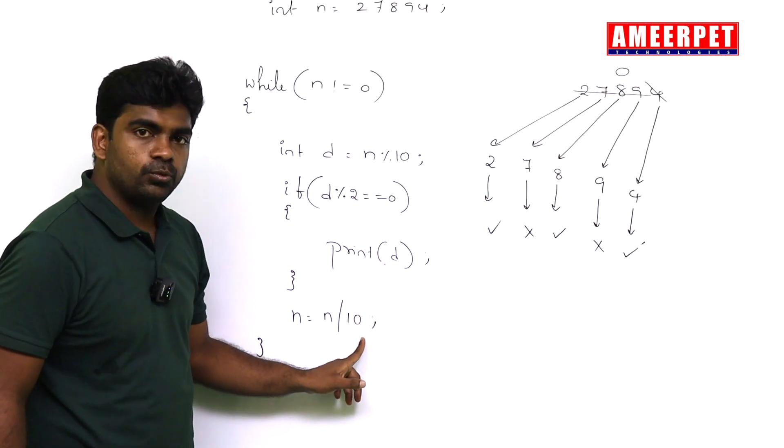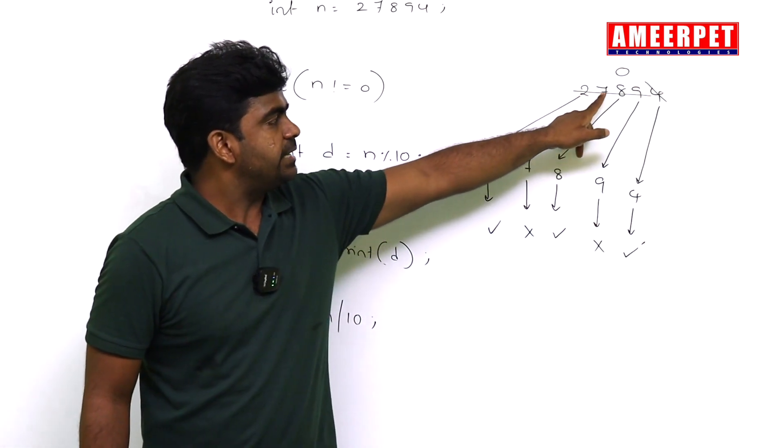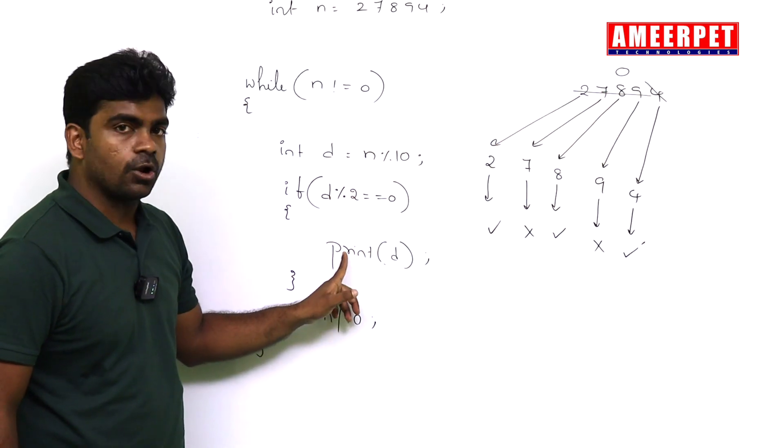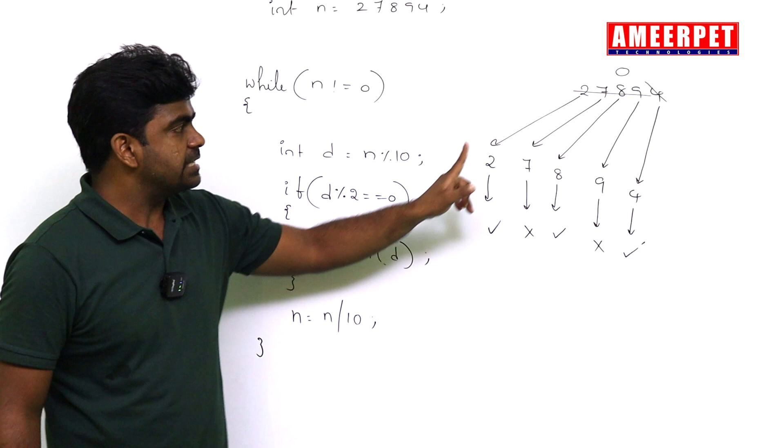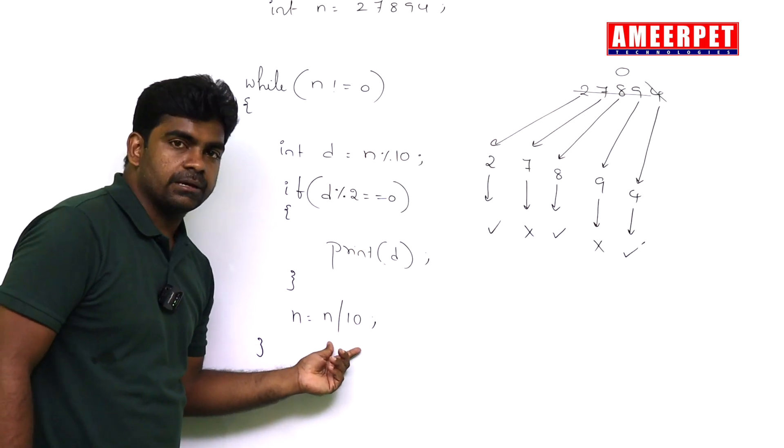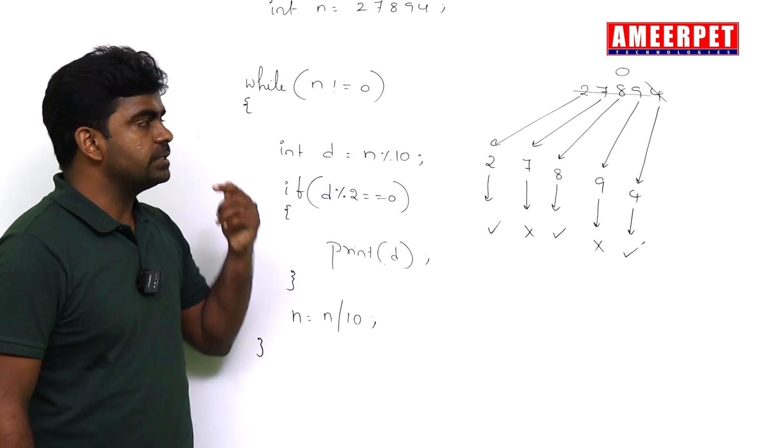8 will print. Next it will remove 8. Next one is 7 will come. 7 is not divisible, will not print. Next one is 2. Yes, 2 is divisible, will print.